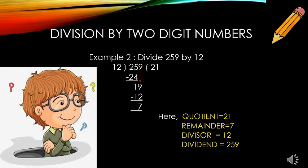Now let us understand division by 2-digit numbers. Divide 259 by 12. We have 2 digits in the divisor, so we take 2 digits from the dividend as well. We know 12 multiplied by 2 is 24. Write 2 in the quotient and 24 below 25, then subtract: 25 minus 24 equals 1. Bring down 9 and write it beside 1. We know 12 multiplied by 1 is 12. Write 1 in the quotient and 12 below, then subtract: 19 minus 12 equals 7. Our quotient is 21, remainder is 7, and divisor is 12.